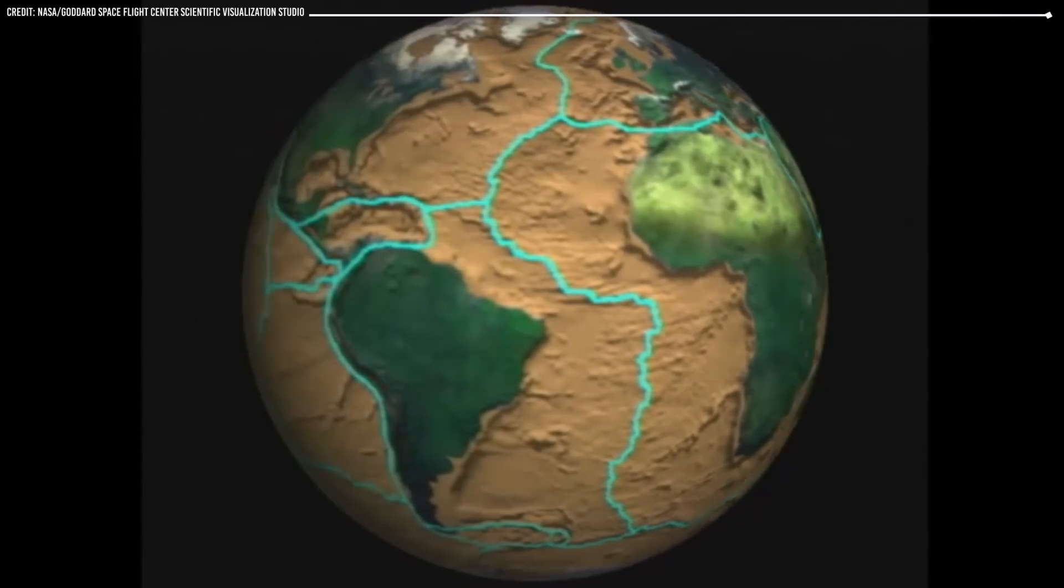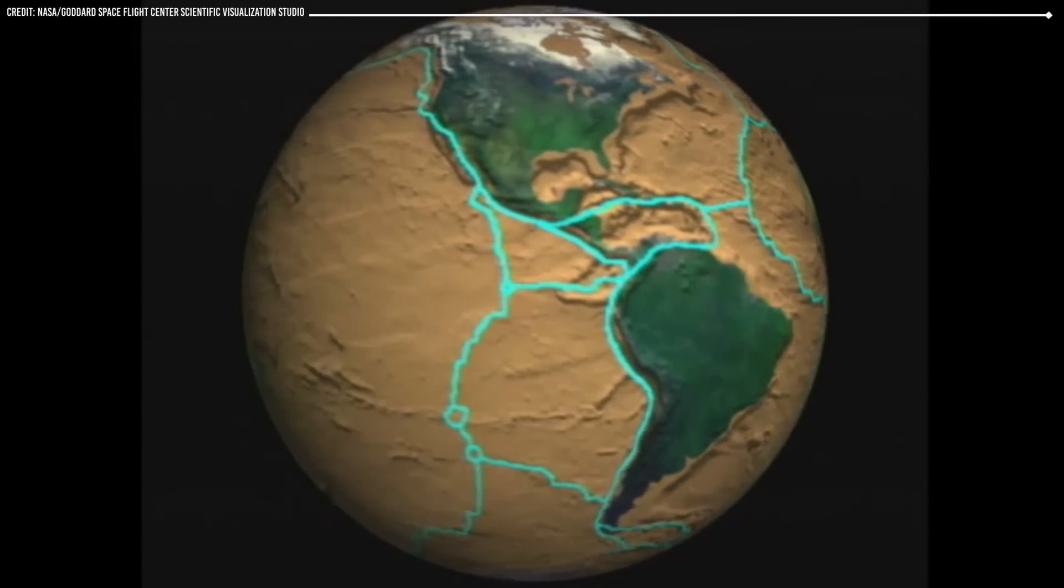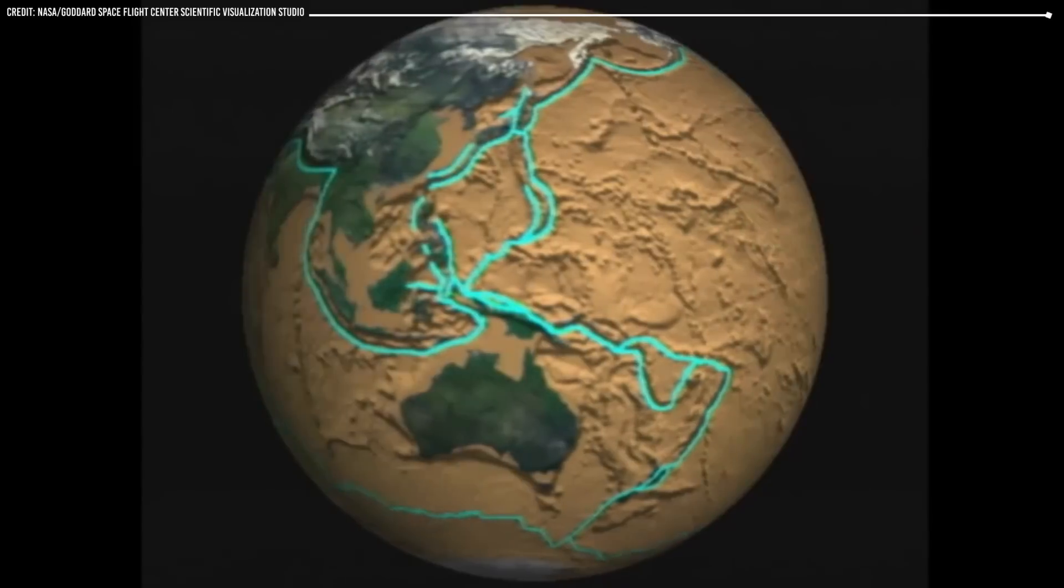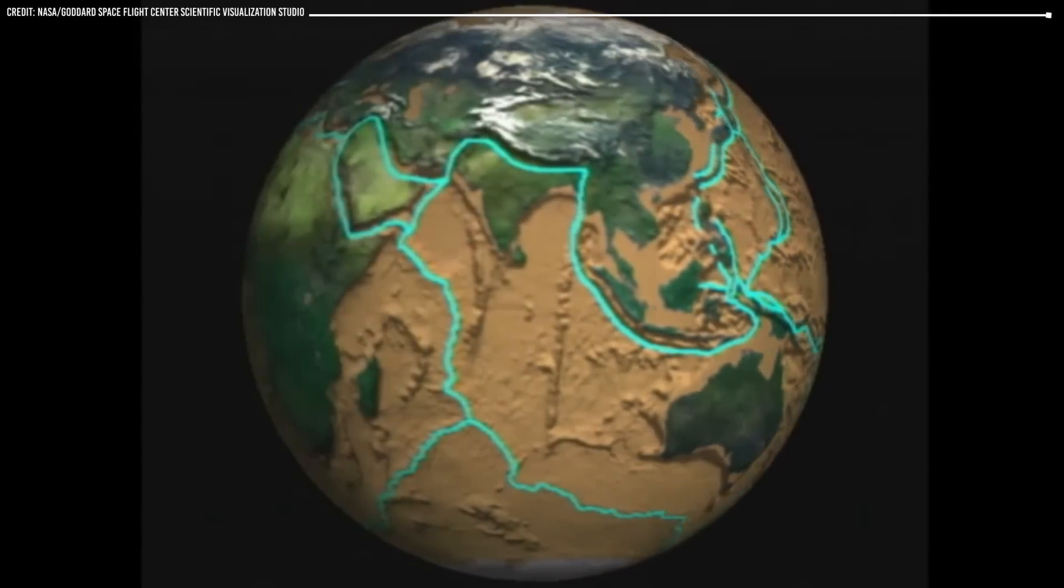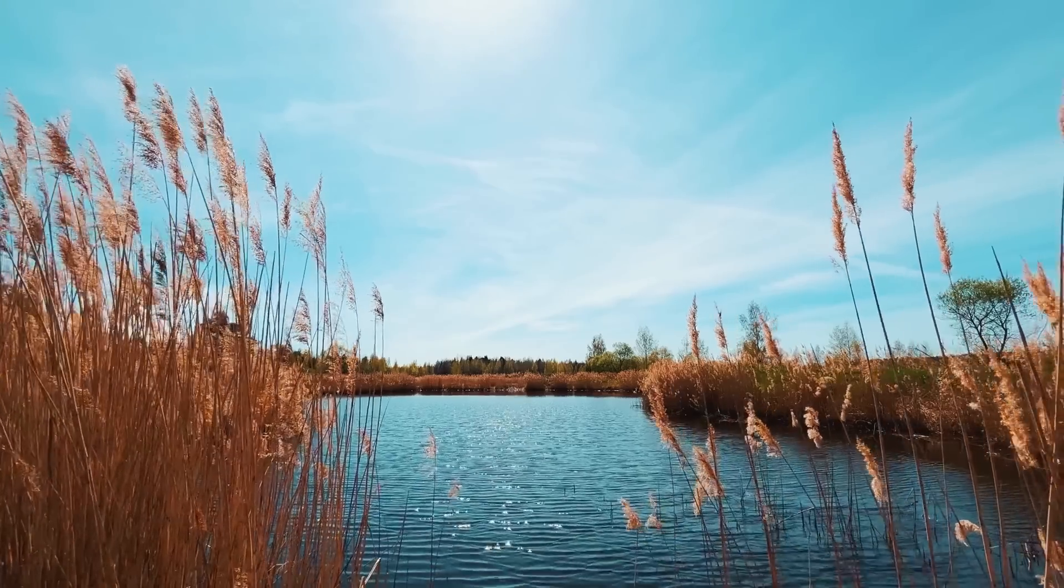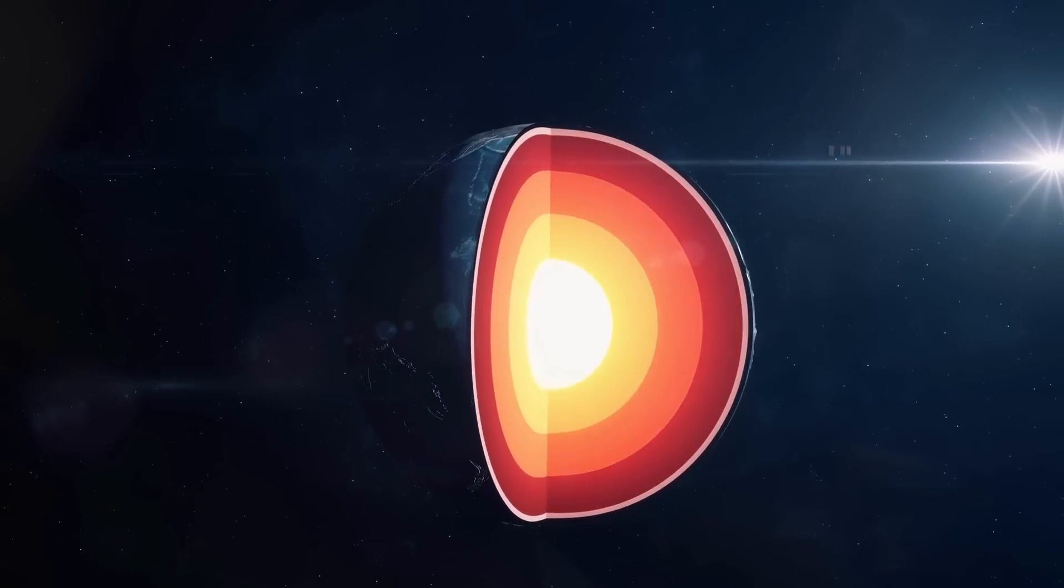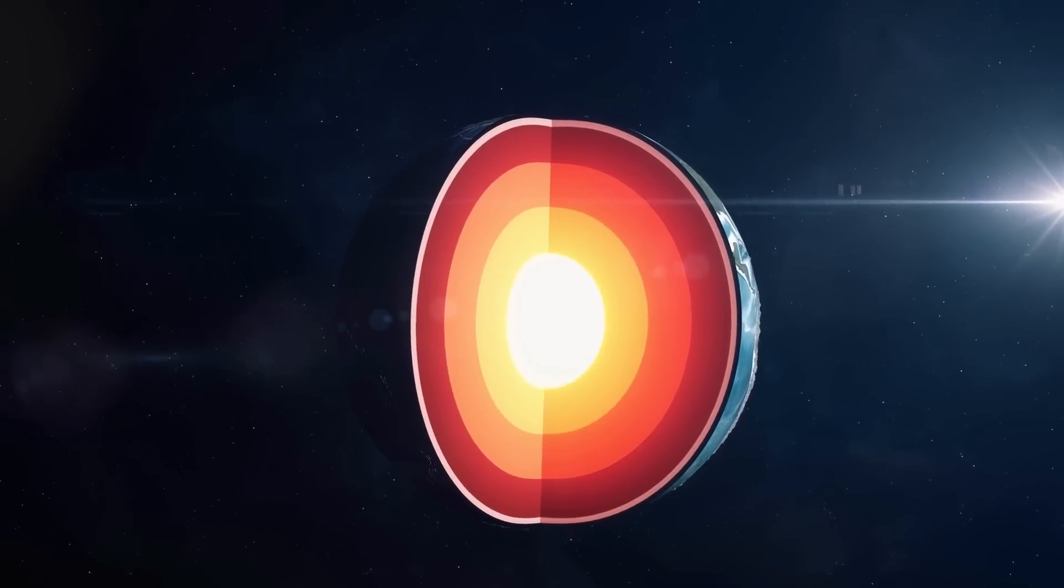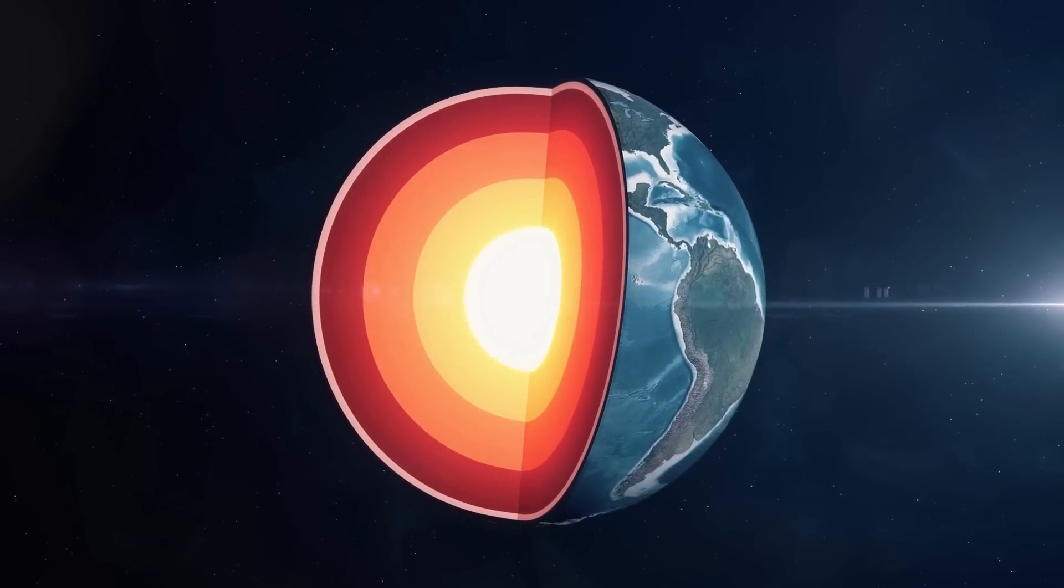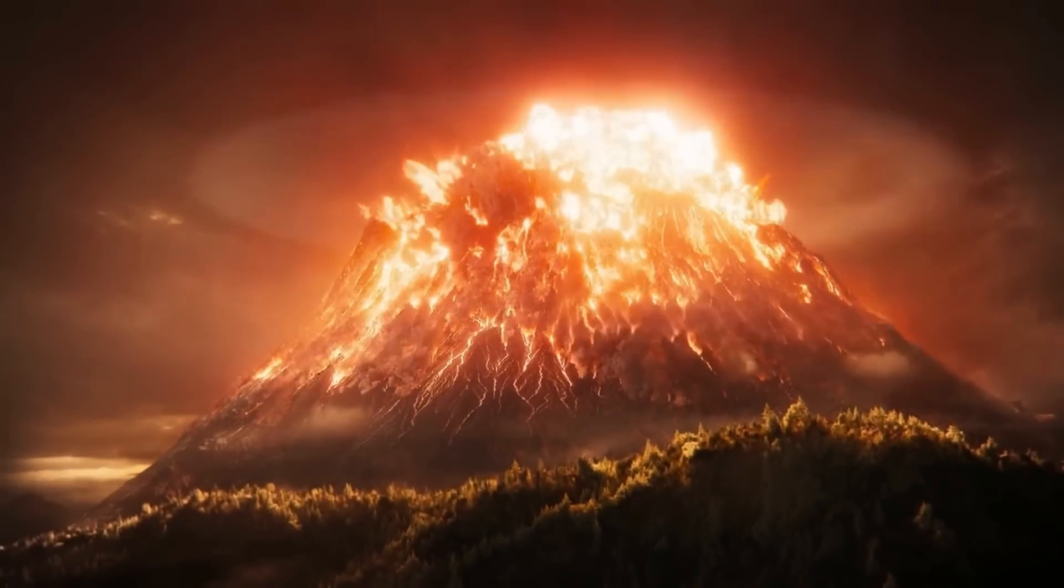These plates move slowly across the surface of the Earth, colliding and pulling apart in certain areas. The movement of these plates plays a crucial role in the formation of mountain ranges, the recycling of nutrients, and the release of gases from the Earth's mantle. In addition, the movement of the plates helps to release heat from the Earth's mantle, which can help to prevent the buildup of pressure that leads to large volcanic eruptions.